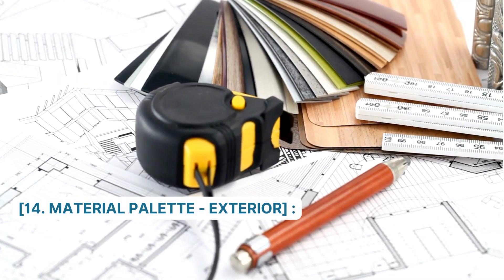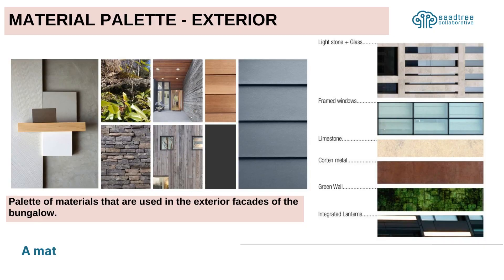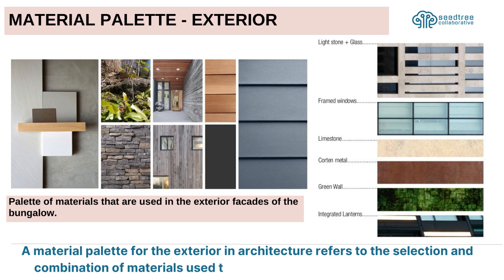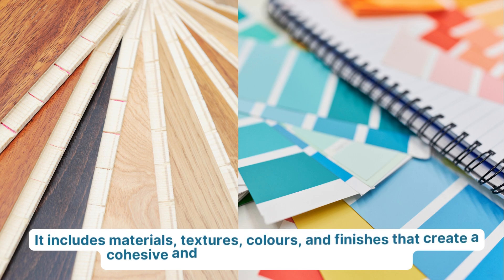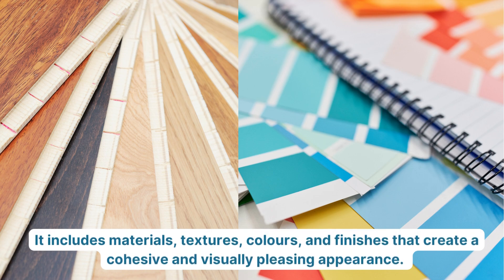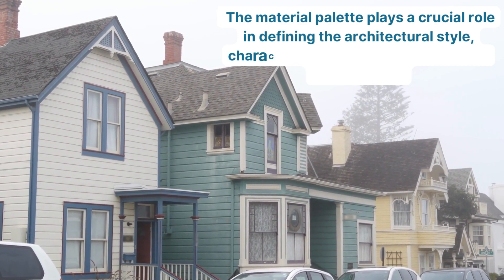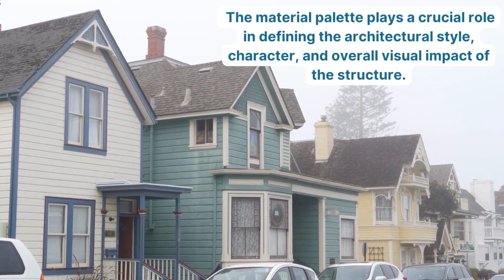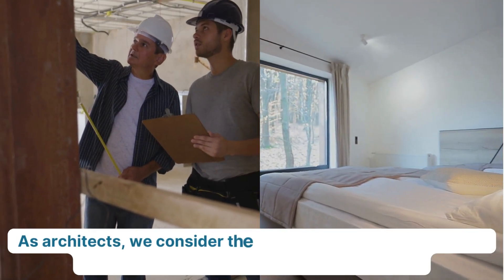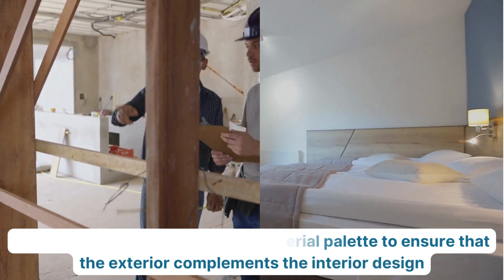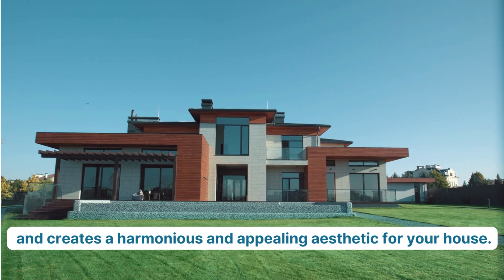Number 14: Material Palette Exterior. A material palette for the exterior in architecture refers to the selection and combination of materials used to finish the building's exterior surfaces. It includes materials, textures, colors, and finishes that create a cohesive and visually pleasing appearance. The material palette plays a crucial role in defining the architectural style, character, and overall visual impact of the structure. As architects, we consider the material palette to ensure that the exterior complements the interior design and creates a harmonious and appealing aesthetic for your house.